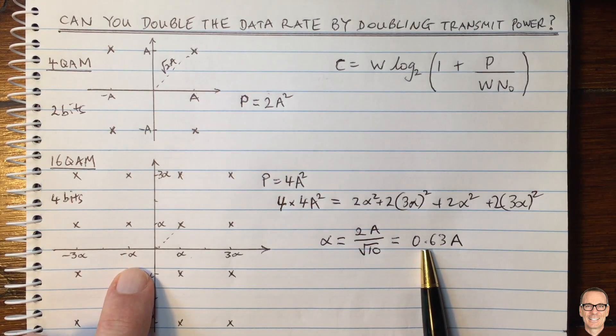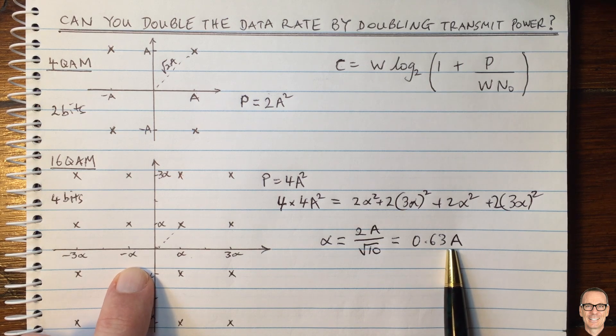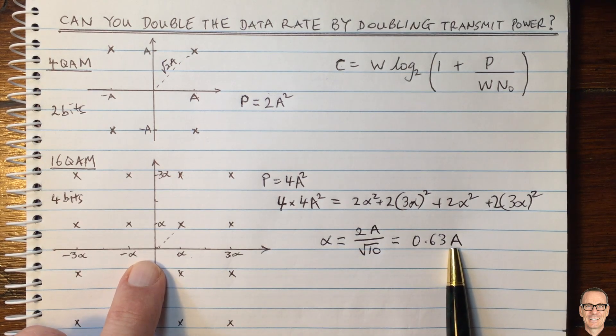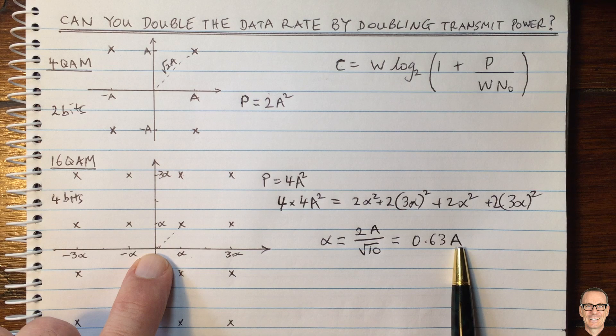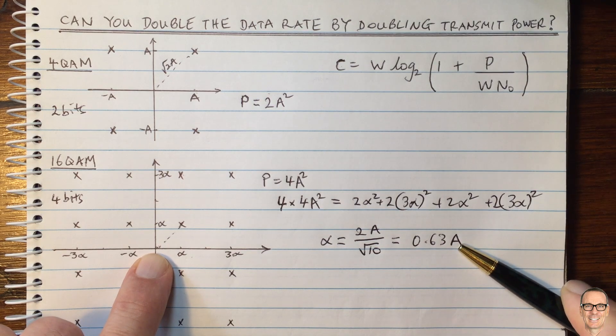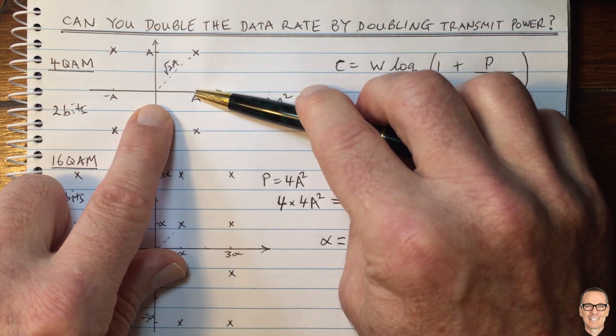Now they are only 1.26a apart. So the noise would have to be bigger than 0.6 of a in order to make an error. And that has a higher probability than being bigger than a naturally.